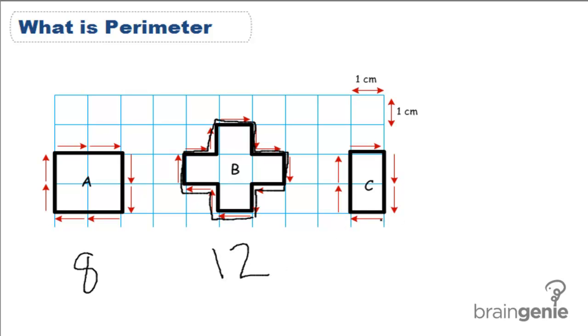And C is 1, 2, 3, 4, 5, 6. The distance all the way around C is 6.